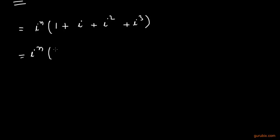and here is 1 plus iota minus 1 minus iota, and these all values will be cancelled. So it is iota raised to the nth power times 0, which means 0. So this is the solution of the expression. Thank you.